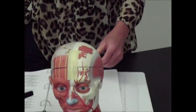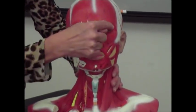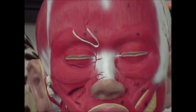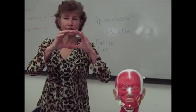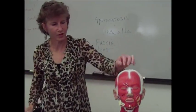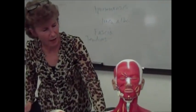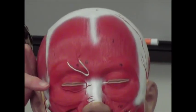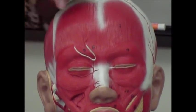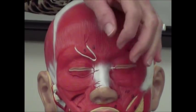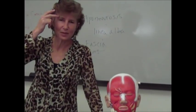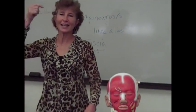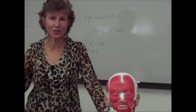Then you have the orbicularis oculi — the circular muscles that run around your eye. An orbicularis muscle is a sphincter muscle; anytime you have a sphincter muscle, it's going to clamp down and close. When the orbicularis oculi closes, that's going to cause you to either wink or blink. It also depresses your lacrimal glands in the corner of your eye. The lacrimal duct is down here — when the muscle contracts, it depresses those lacrimal glands that drain into the lacrimal duct, which drains into your nasal cavity and you get a runny nose.